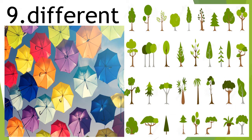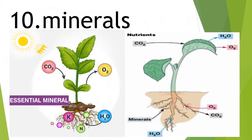Number 9: D-I-F-F-E-R-E-N-T, Different. Children, as you can see here different colorful umbrellas — the same way you can see different types of plants, different kinds of trees, or different shapes and sizes of leaves. Number 10: M-I-N-E-R-A-L-S, Minerals, which is found in the soil and absorbed by the roots.